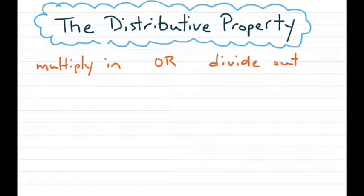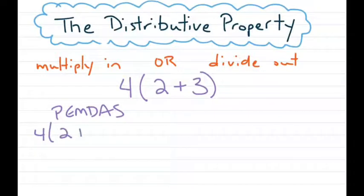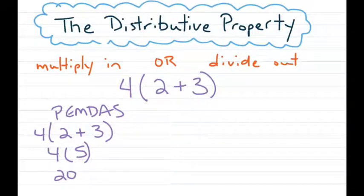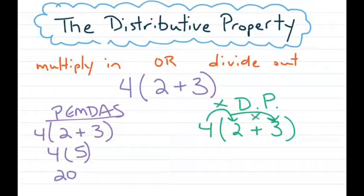Let's start with the multiply-in approach. We're going to take the expression 4(2 + 3). Whenever you have a number written right next to parentheses, that means multiplication. The regular PEMDAS way: do parentheses first — 2 plus 3 is 5 — then 4 times 5 gives you 20. Now we're learning a new way using the distributive property, abbreviated DP. If I have a number outside of parentheses, I can take that number and distribute it in through multiplication to each of the numbers inside.